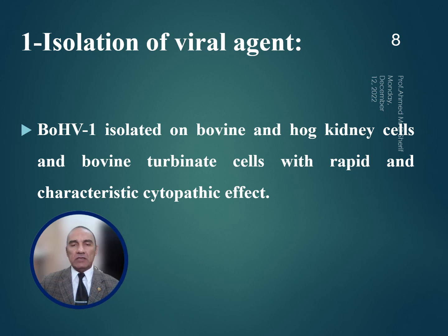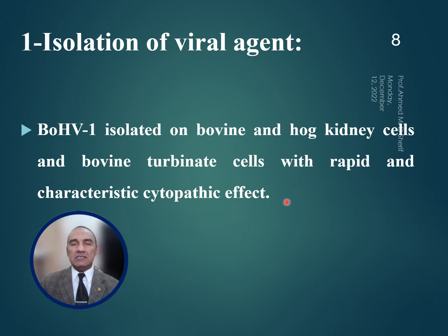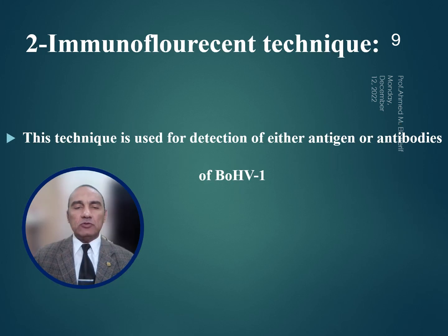The most accurate step is the isolation of the viral agent. Bovine herpes virus 1 is isolated on bovine and hog kidney cells, as well as bovine turbinate cells, with rapid and characteristic cytopathic effect on the tissue culture.